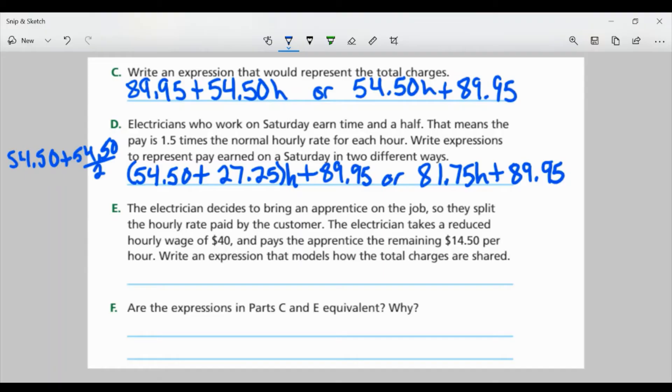Part E, the electrician decides to bring an apprentice on the job. So they split the hourly rate paid by the customer. The electrician takes a reduced hourly wage of $40 and pays the apprentice the remaining $14.50 per hour. Write an expression that models how the total charges are shared. Well, the electrician is making $40 per hour. So I have $40 per hour times H plus the apprentice is making $14.50 each hour. Plus we have the service fee of $89.95.